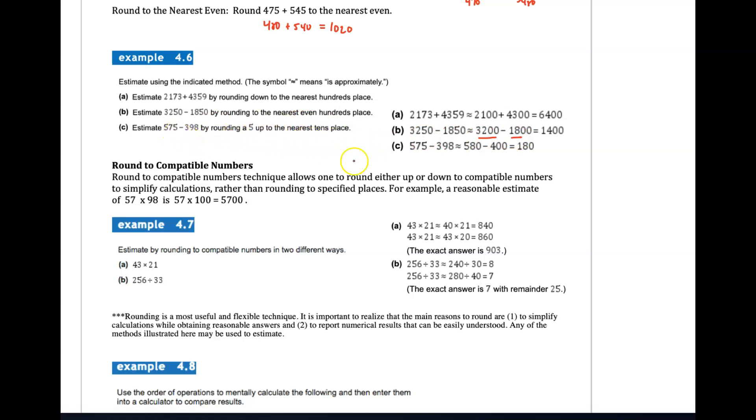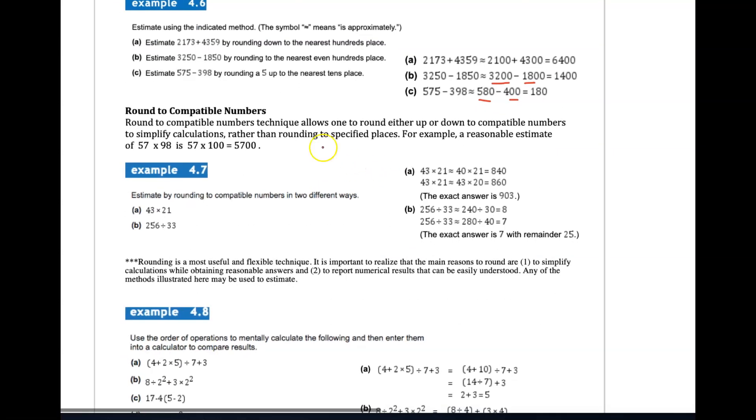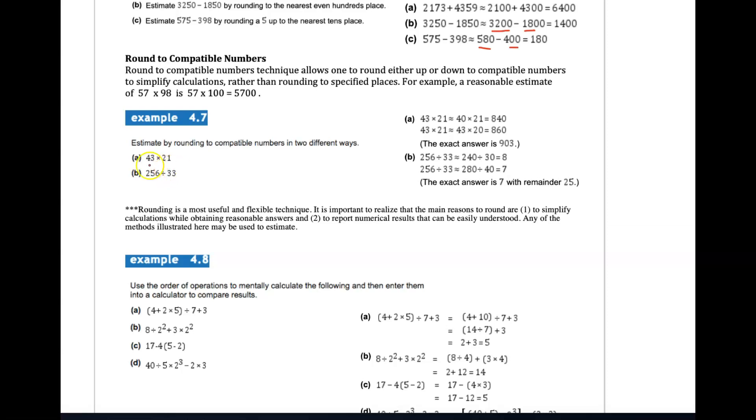Another way is to round to compatible numbers—just go to numbers that make it easier for you to estimate. 57 times 98 is the same as 57 times 100. There could be multiple solutions based on what's compatible to you. 256 divided by 33 could be 240 divided by 32. They're just estimates—that's all we're trying to do.